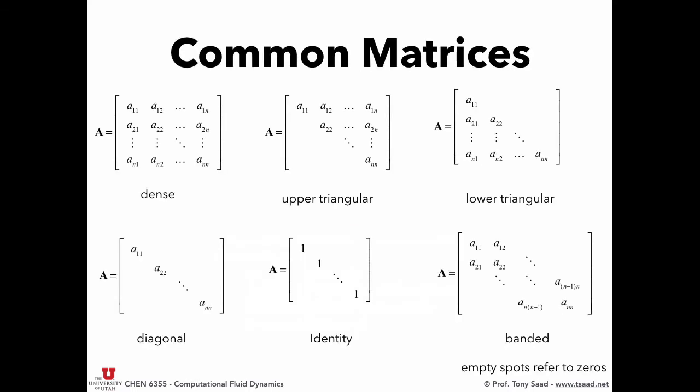And we will typically deal with a bunch of matrices. This is nomenclature that you're familiar with. A dense matrix is one where the majority, vast majority of coefficients are non-zero in the matrix. An upper triangular matrix is one where main diagonal and all upper diagonals are non-zero. A lower triangular is the opposite of that. A diagonal matrix is one where all the diagonal terms are non-zero. An identity matrix has ones on the diagonal. A banded matrix has just a few diagonals, the first upper, first lower, second upper, second lower. So a tridiagonal or a pentadiagonal system, those are banded matrices.